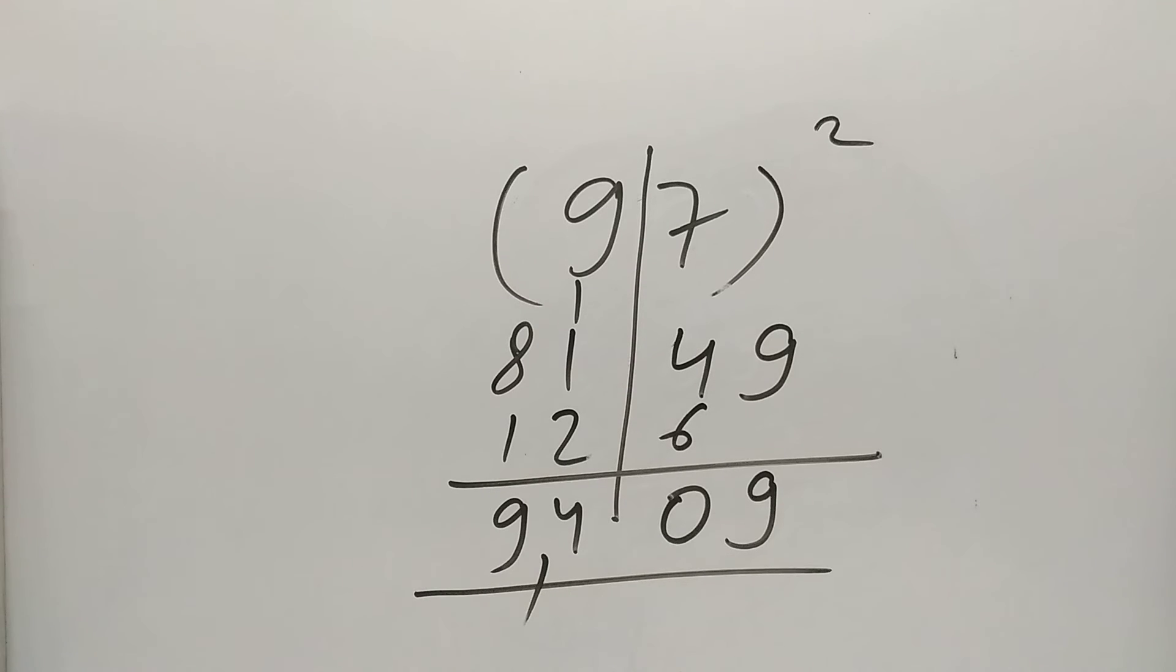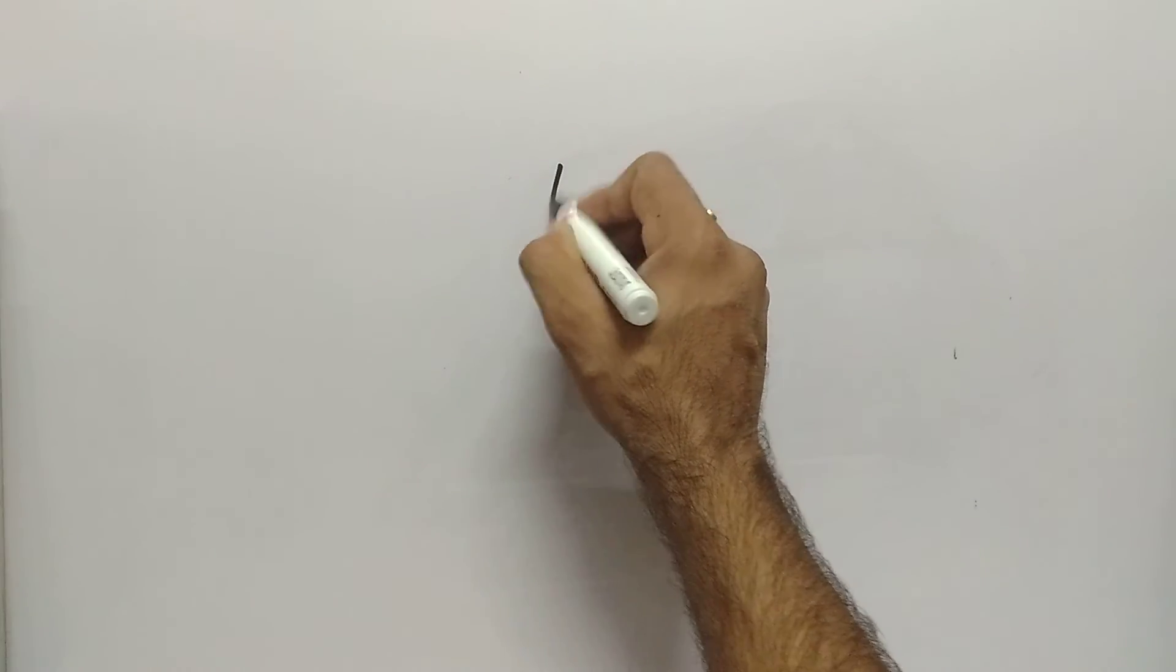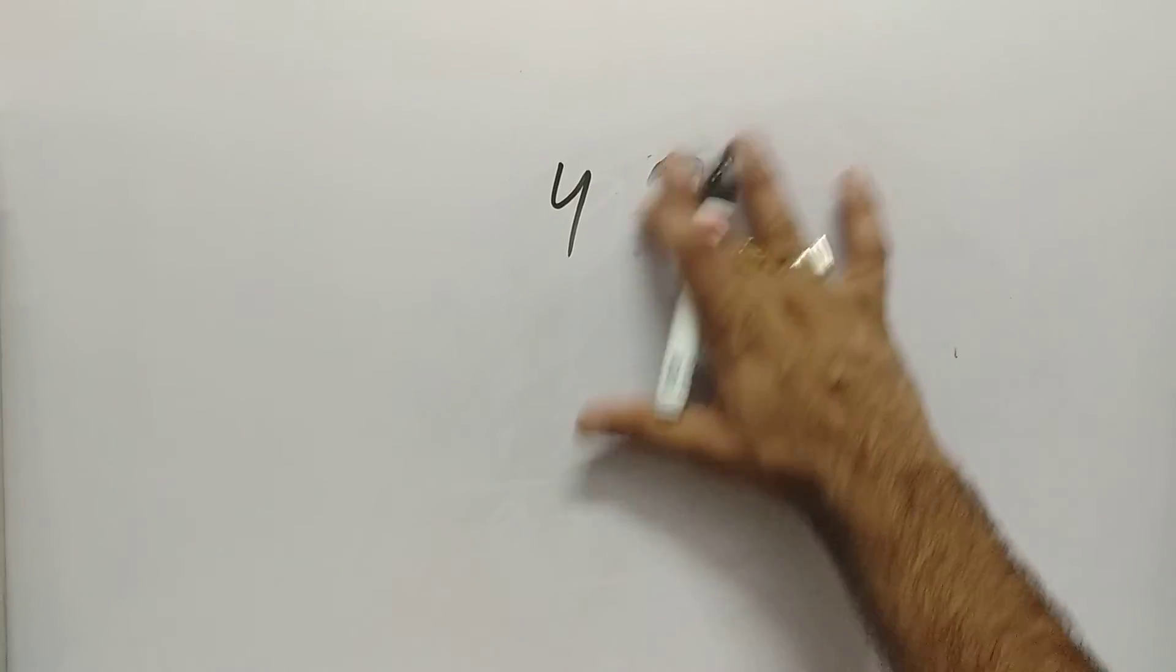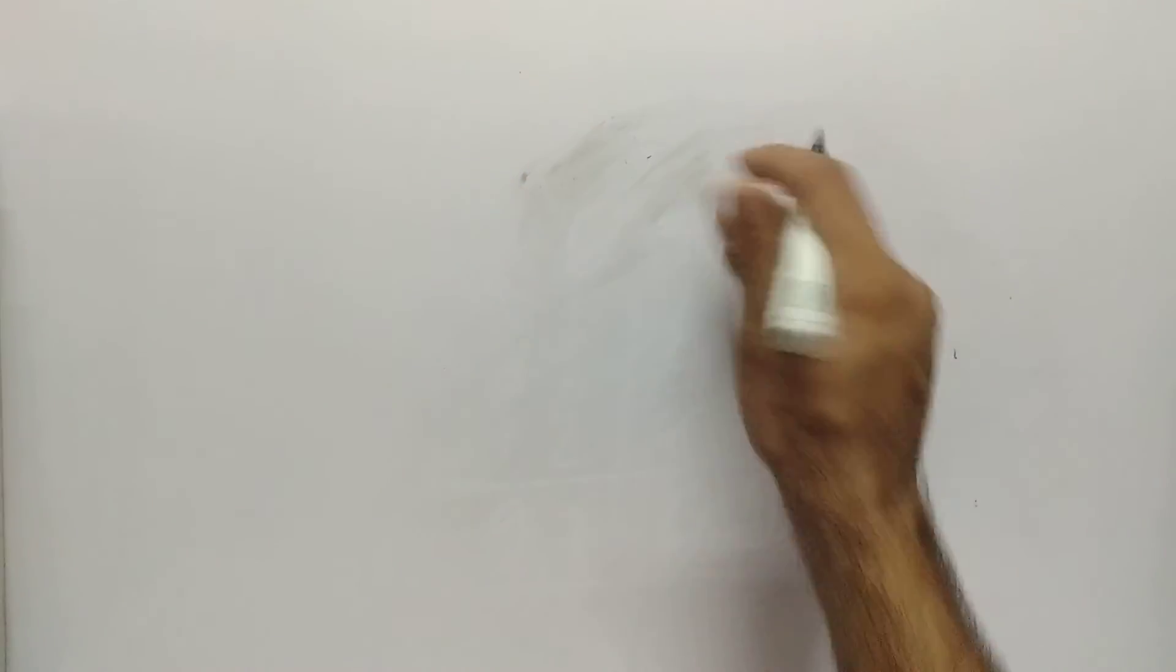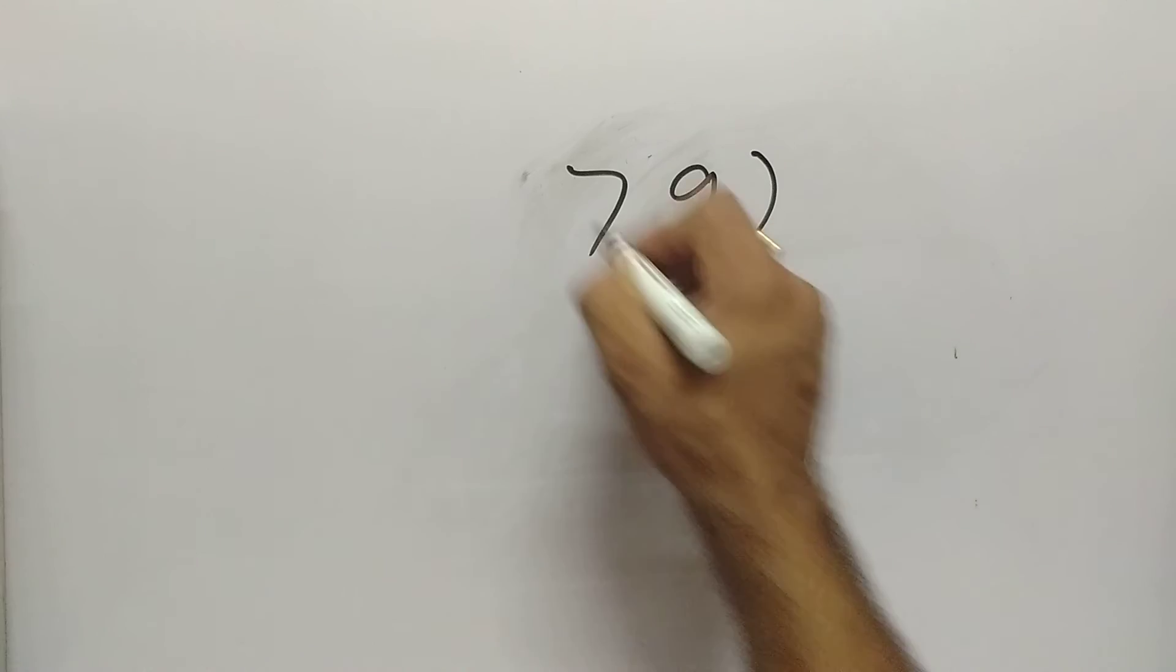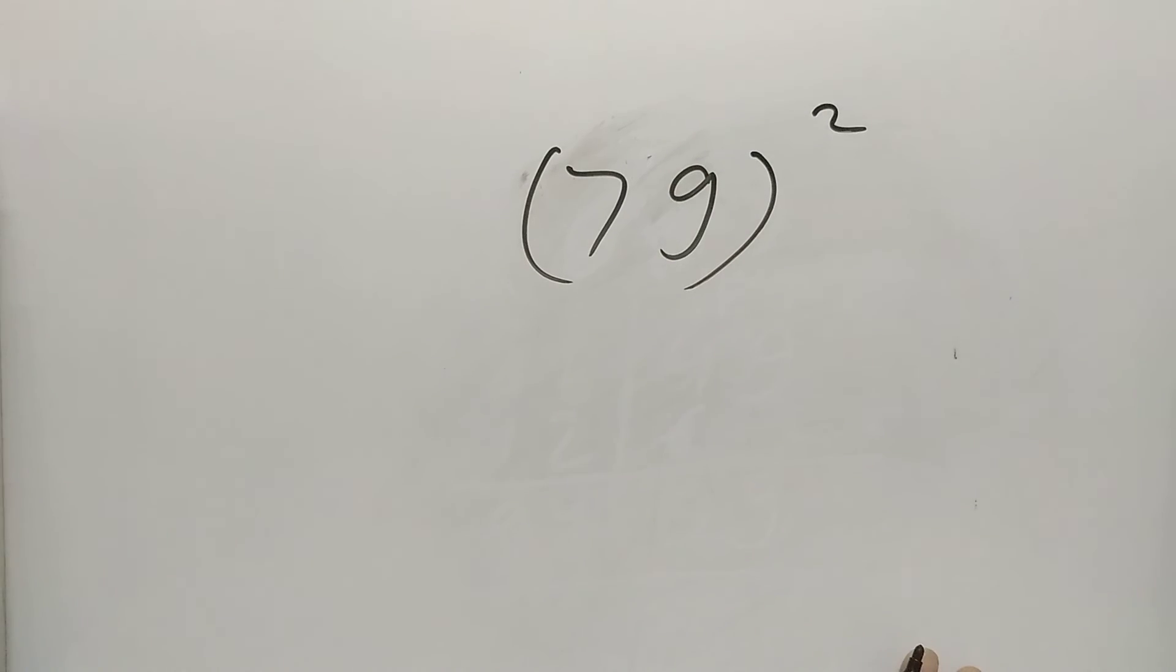I hope now you can find the square of any two-digit number. Let's take one more example and you are going to try. You are going to tell me the answer just in 15 seconds. The number is 79 square. What you are going to do? You are going to make a line.